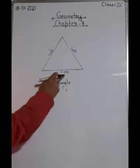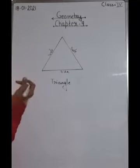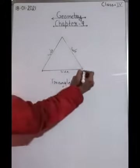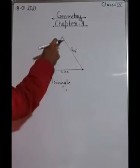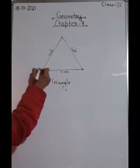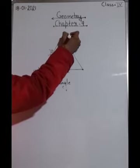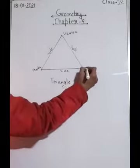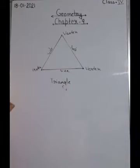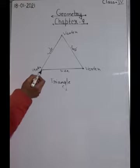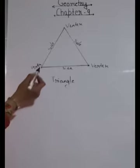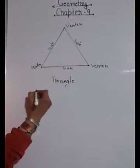Our triangle has three sides. Now the point where two line segments meet is called the vertex - these two line segments join here, and these two join over here. So how many vertices does a triangle have? One, two, three - three vertices, or you can say corners. So a triangle is a polygon with three sides.